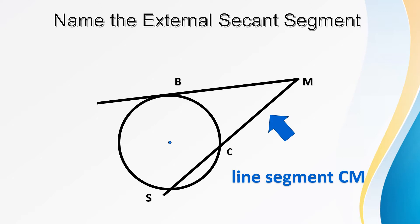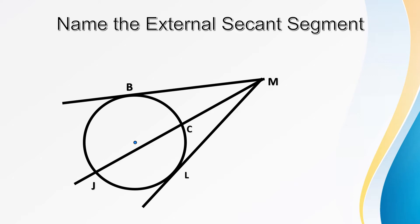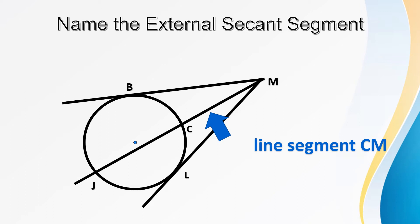Why? Line MB is a tangent line, so it has no external secant segment. Name the external secant segment in this illustration. How many external secant segments are there? There's only one — that's line segment CM. Line BM and line LM are tangent lines.